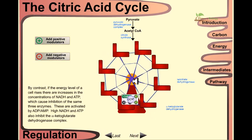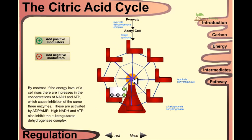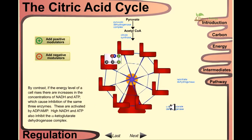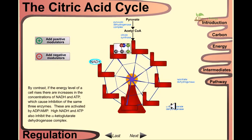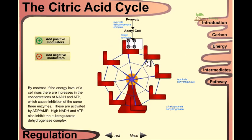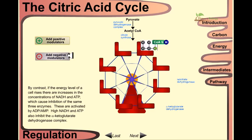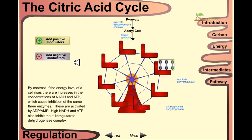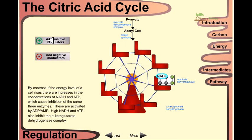High NADH and ATP also inhibit the alpha-ketoglutarate dehydrogenase complex. Normally the regulation occurs in three steps, which you have seen in case of both positive and negative modulators. But negative modulators also act on the alpha-ketoglutarate dehydrogenase step.